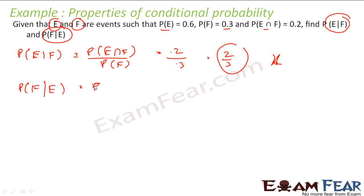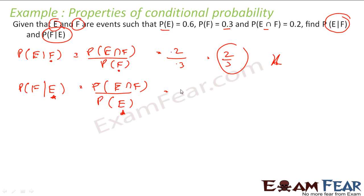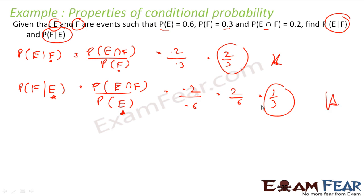Now let us find probability of F given E. That is nothing but probability of E intersection F divided by probability of E this time. E intersection F is 0.2 and probability of E is 0.6, so this becomes 2 by 6, that is 0.2 divided by 0.6. So we see both values are different.